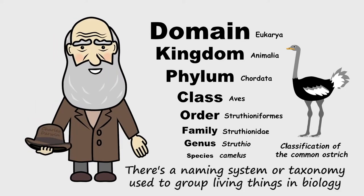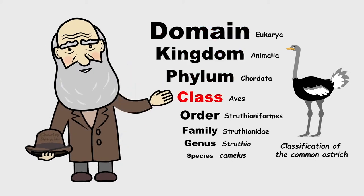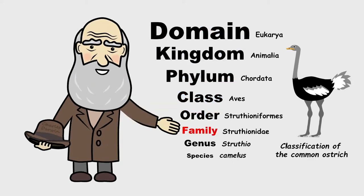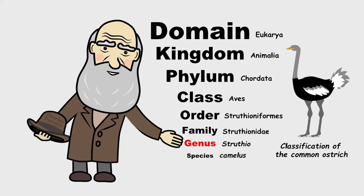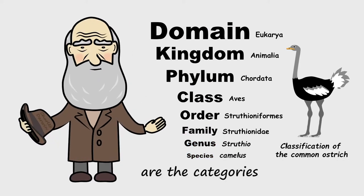There's a naming system or taxonomy used to group living things in biology: Domain, Kingdom, Phylum, Class, Order, Family, Genus, Species, and other categories.